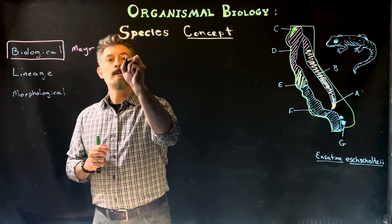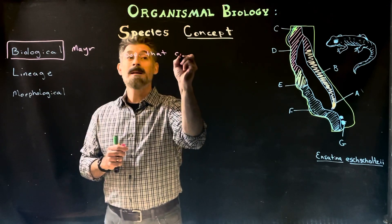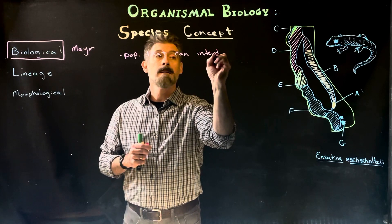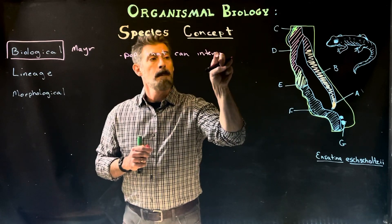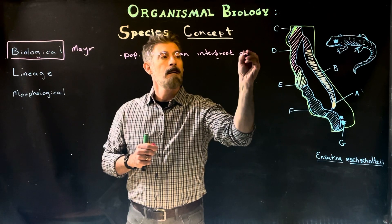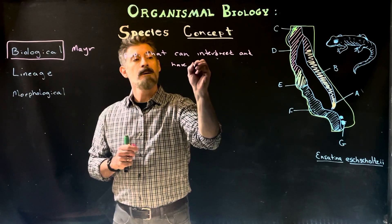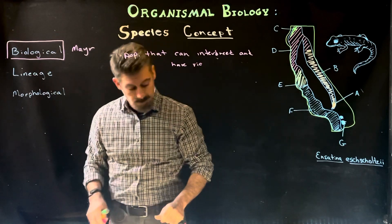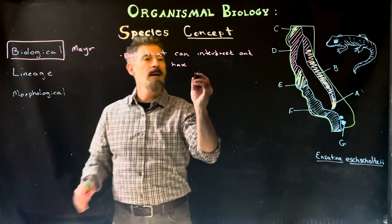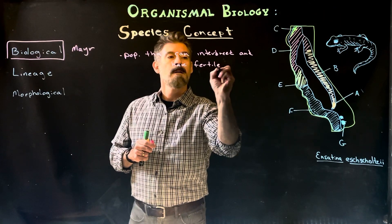A population that can interbreed — it doesn't mean they do, but they can interbreed. And they can have not just viable offspring — viable meaning they're alive and can actually be born — but they have to have fertile offspring.